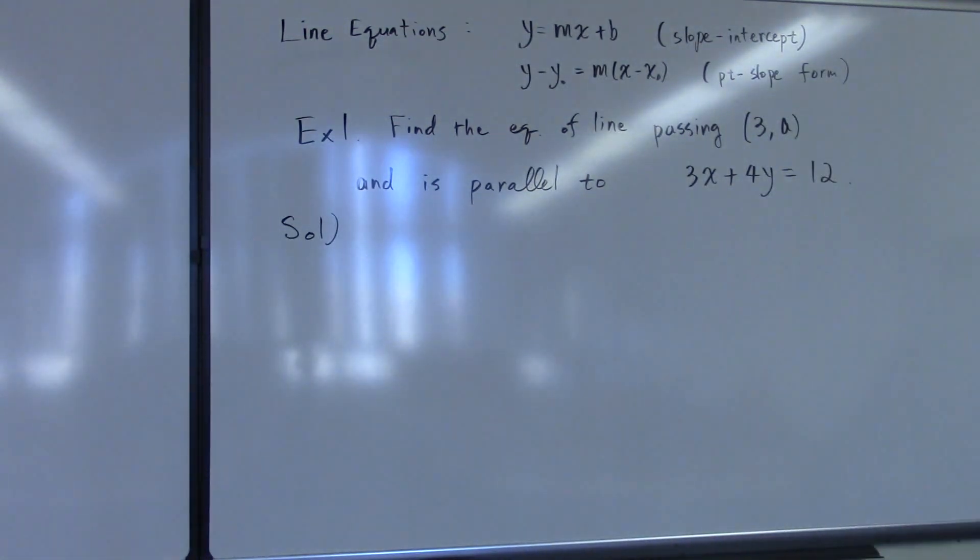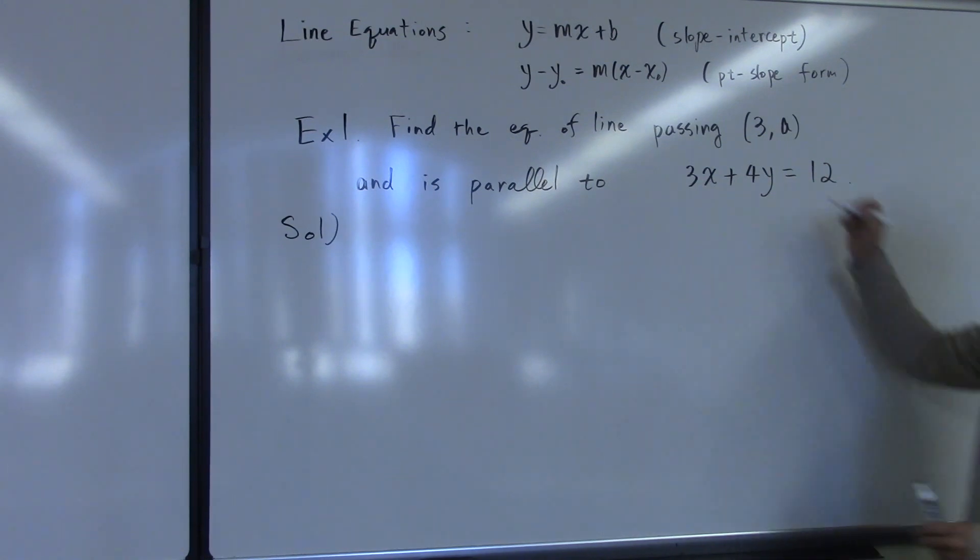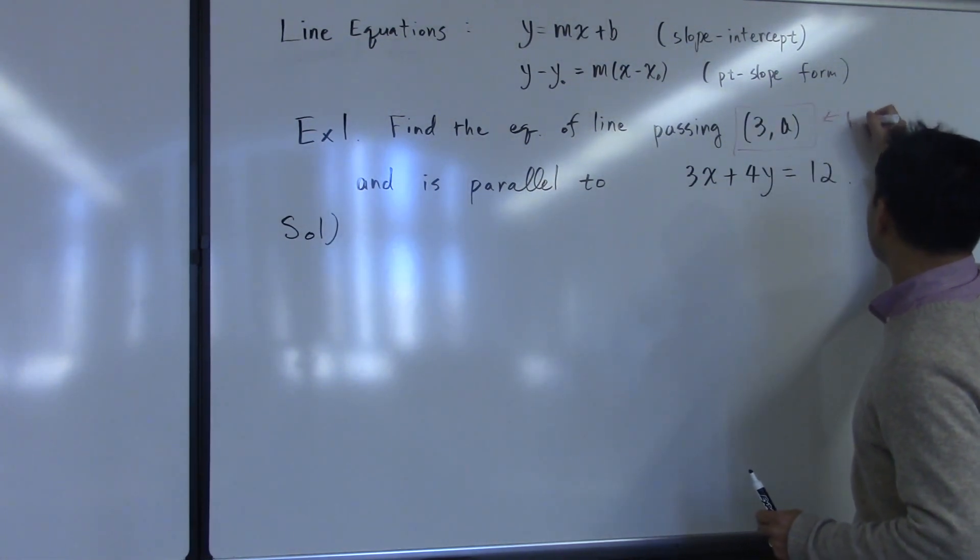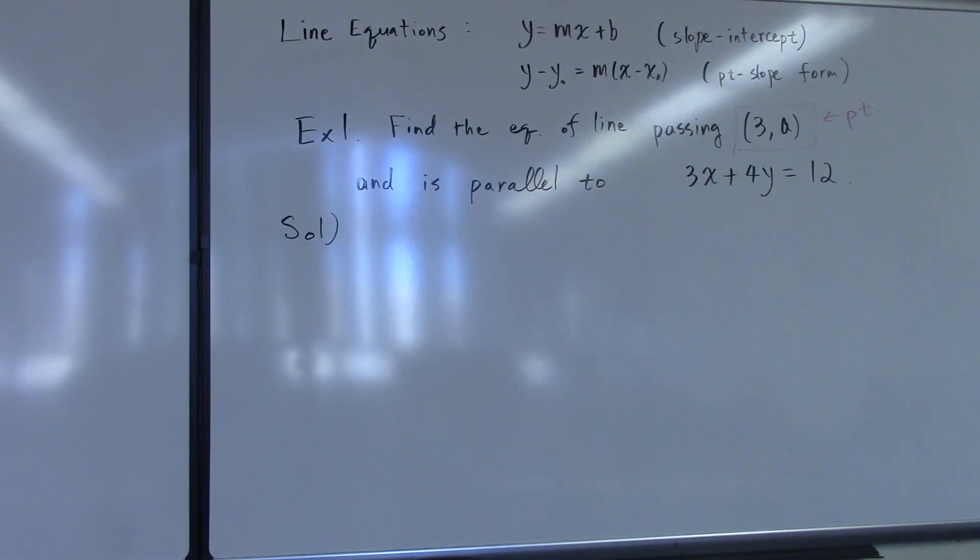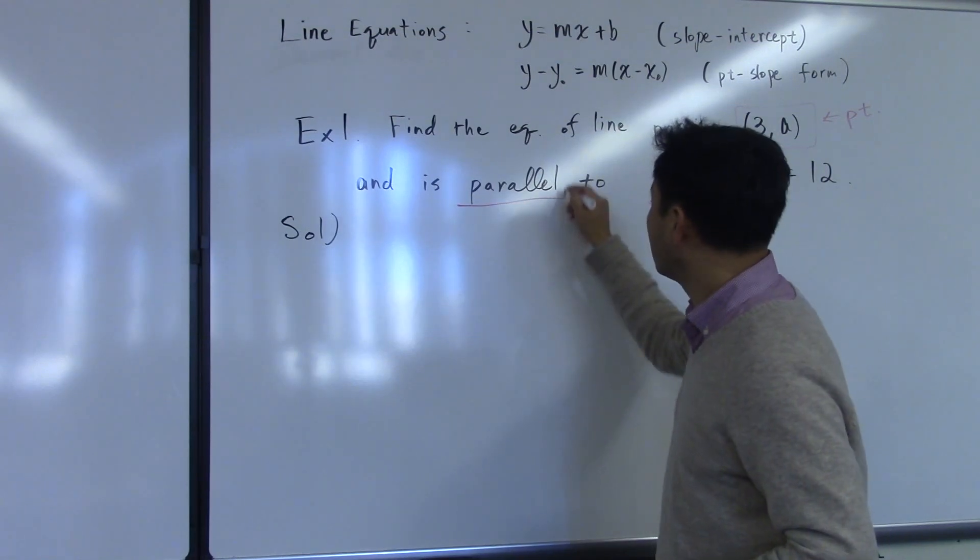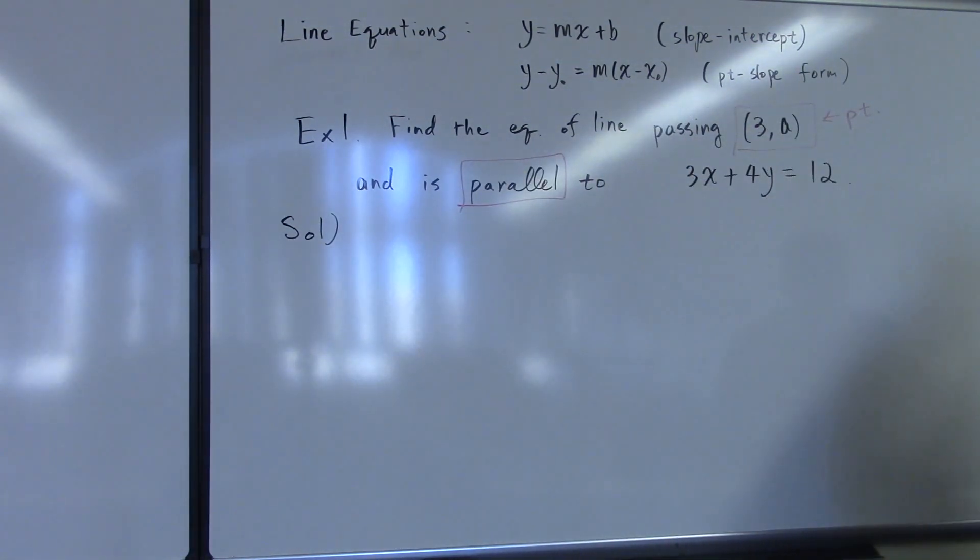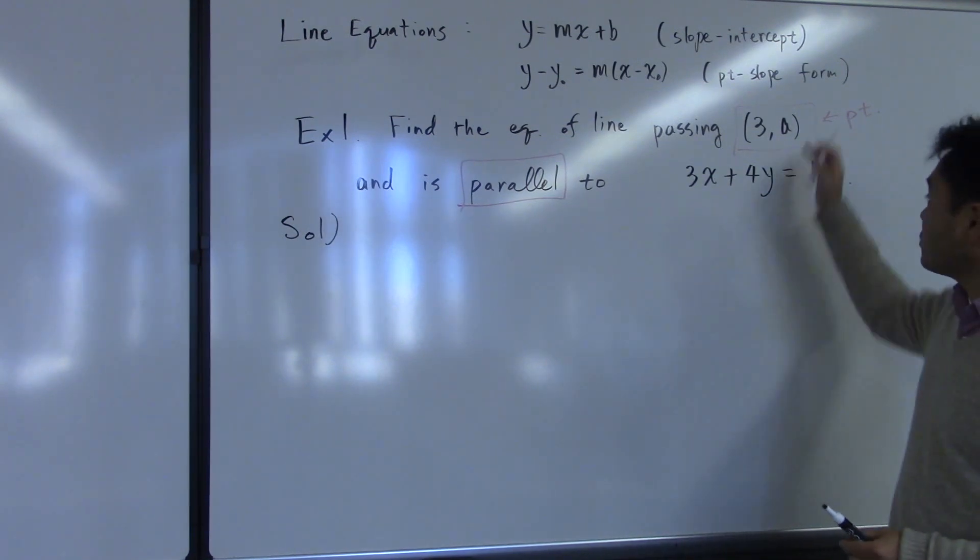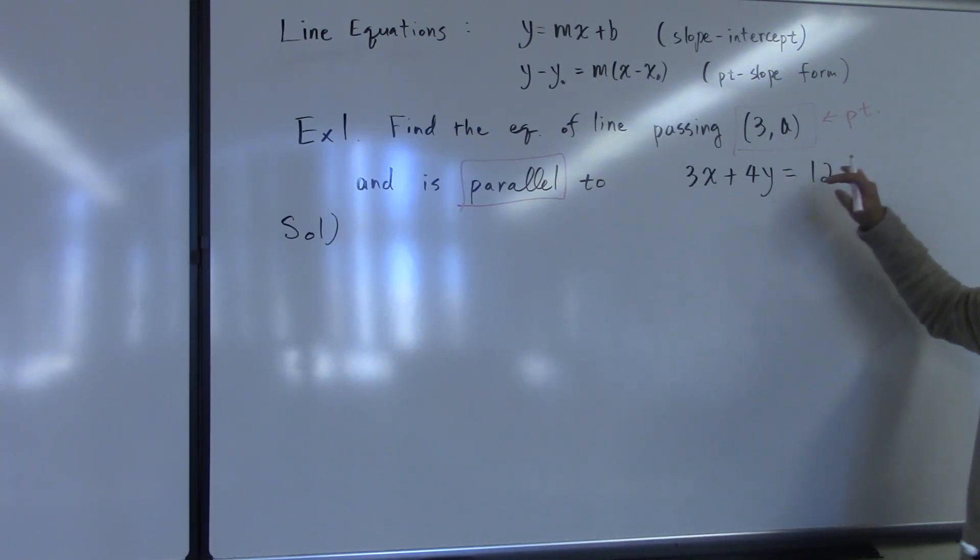Now in this question, you can see that you're given a point because 3 comma a is a point. And the next important word here is parallel. When two lines are parallel, their slopes are the same. So this question means you need to find the equation of the line that passes through this point, and the slope of the line has to be the same as the slope of this line.